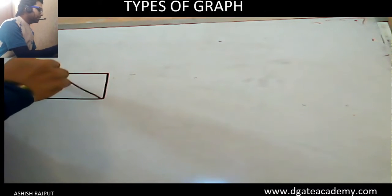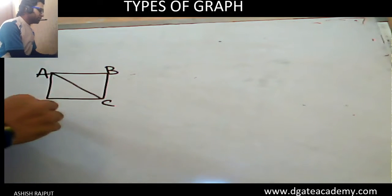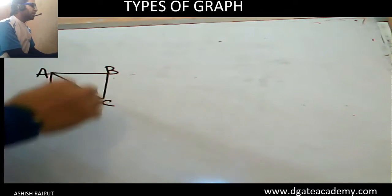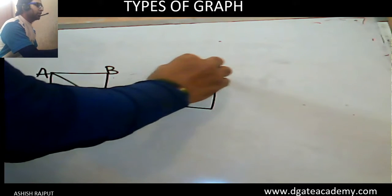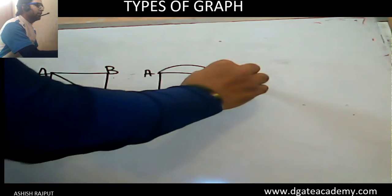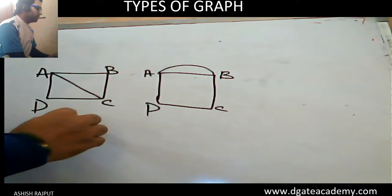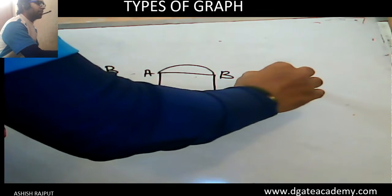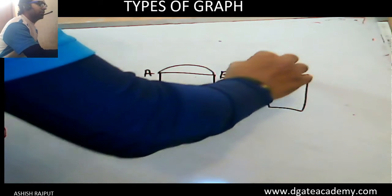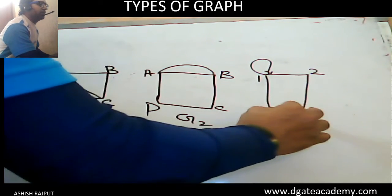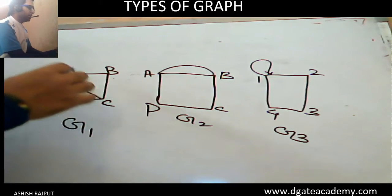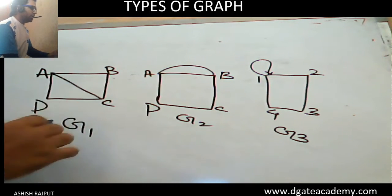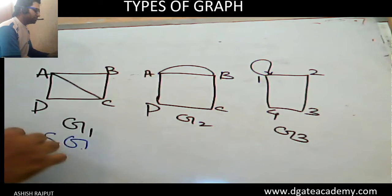Suppose this is the graph — in this graph there are 4 vertices and 5 edges, and here are the parallel edges. Let's label: suppose vertices a, b, d — this is graph number one. Graph number two, and graph number three with vertices labeled 1, 2, 3. In the simple graph, no parallel edges or loops are allowed.